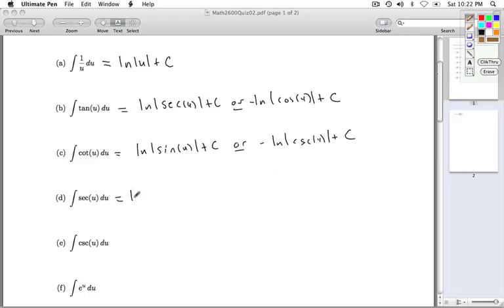Integral secant u du, natural log absolute value secant of u plus tangent of u plus c, or negative natural log absolute value secant of u minus tangent of u plus c.